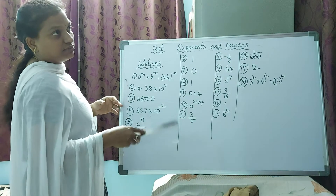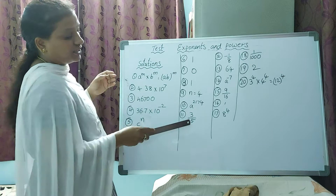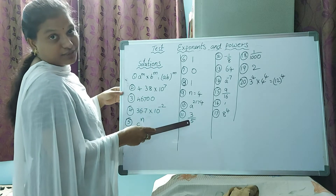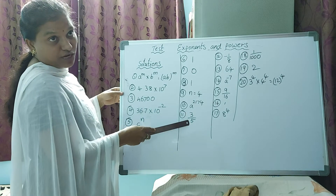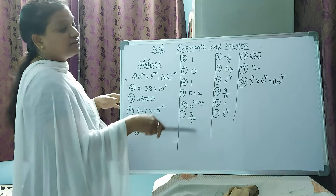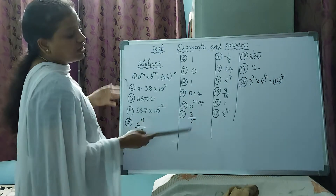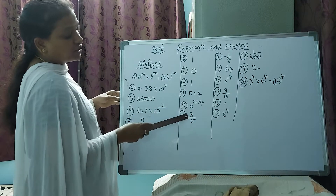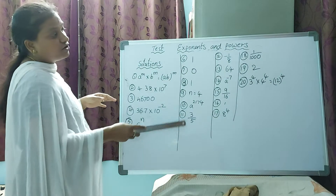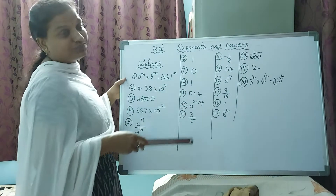Next: (3/5) whole power minus one — that means we have to reciprocal it, numerator to denominator, denominator to numerator. Again it gives whole power minus one, so you reciprocal again and you will get the answer 3/5.